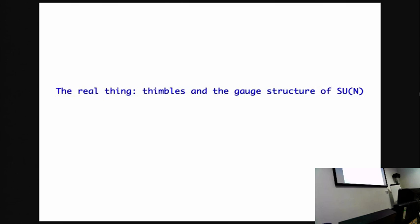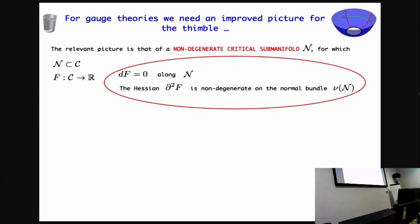Well, you have to change your picture. Now the whole thimble picture is no more valid. Simply because for each critical point, well, there is always an orbit coming together, which are the gauge transforms of that critical point. So the new picture is this one. Instead of the critical point, you have an orbit attached to that critical point.